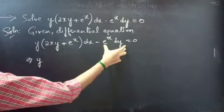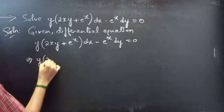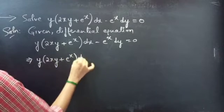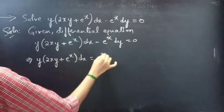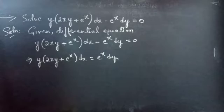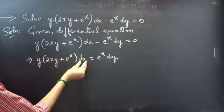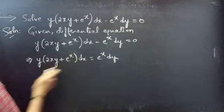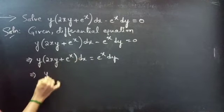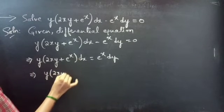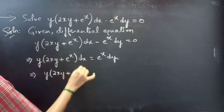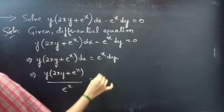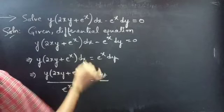Now let's take this term to the RHS. Take dx to the RHS and bring e^x to the LHS. You will get y times (2xy plus e^x) by e^x equals to dy by dx.